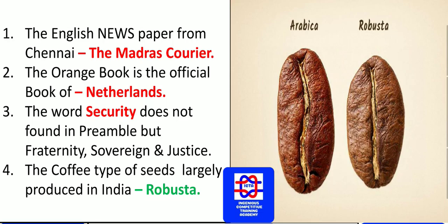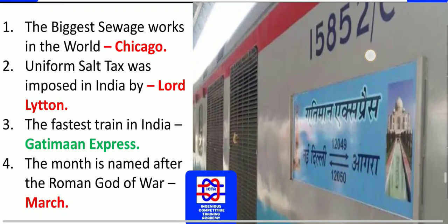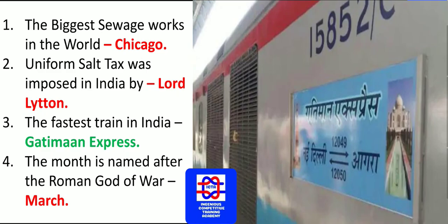The biggest sewage works in the world is located in Chicago. The uniform salt tax in India was imposed by Lord Lytton, who was a viceroy who imposed a common and constant salt tax. The Gatiman Express, running from Delhi to Agra, is the fastest train in India with a speed of up to 150 kilometers per hour.